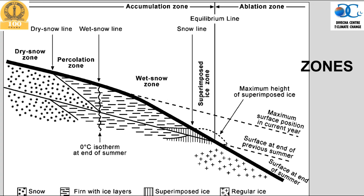As we move further down the valley, melt on the surface percolates all the way down to the bottom of the snowpack, or to the top layer of ice. This means the entire snowpack is now wet — there is liquid water in it during summer time. That zone is known as the wet snow zone.